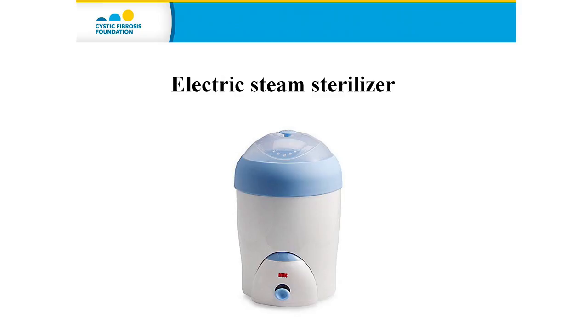The final heat method option is to place it in an electric steam sterilizer. Is there a specific type or brand you should use? The electric steam sterilizer is a baby bottle sterilizer, and there are several on the market. I would choose a reputable brand that has at least a six to eight minute steam cycle.